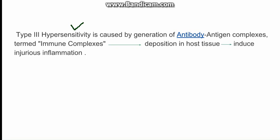This is also known as immune complex mediated reaction and is caused by generation of antibody and antigen complexes. The antigen and antibody complexes are also known as the immune complexes. In this reaction, these immune complexes get deposited in a host tissue. The host tissue can be joints, or kidney, and they get deposited there and then induce an inflammatory process which leads to injury of that host tissue. This is, in brief, the type 3 hypersensitivity reaction.